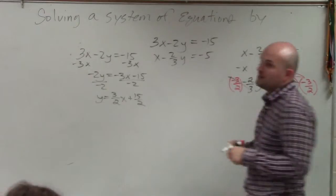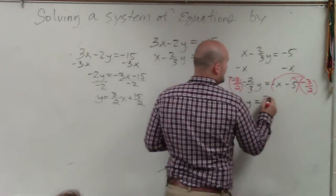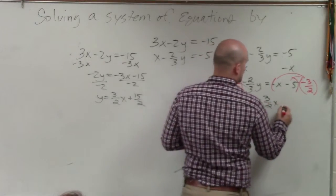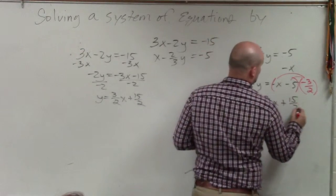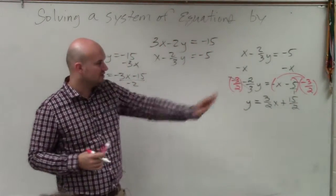So any number multiplied by its reciprocal goes to 1. So we're left with y equals a positive 3 halves x plus 15 over 2. Multiply a whole number times a fraction: convert the whole number to a fraction and multiply straight across.